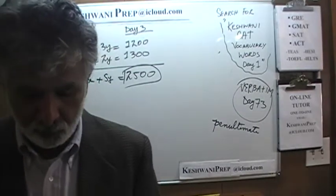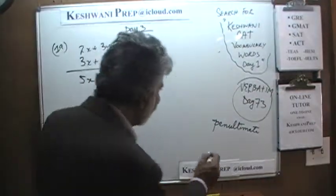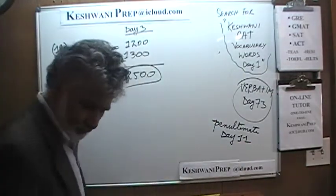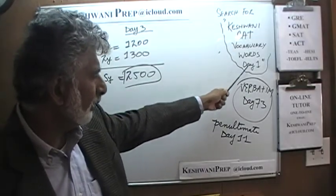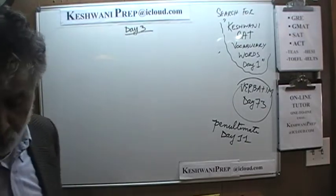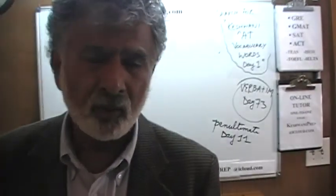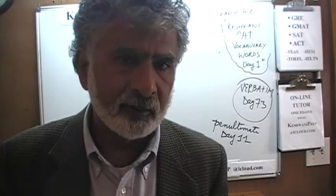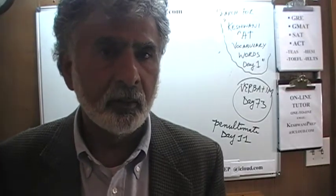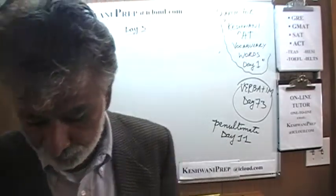We learned the word 'penultimate' on day number 11 — just type in Keshwani SAT vocabulary words day 11. Working on vocabulary is the best thing you can do to get a better score in the reading part, because reading skill develops over many years. In the short term, the best thing you can do is work on vocabulary — people make mistakes because they read and don't understand the words and pick the wrong answer. Learn the words so you understand what is going on.